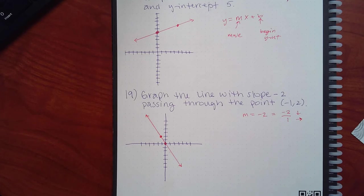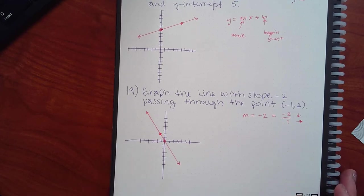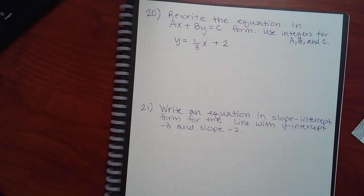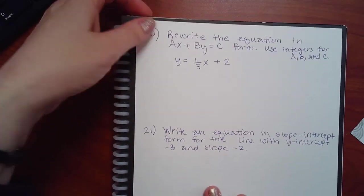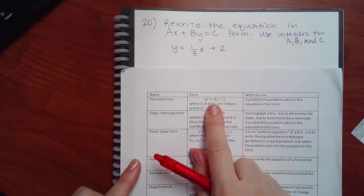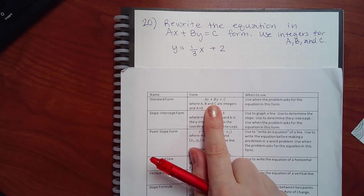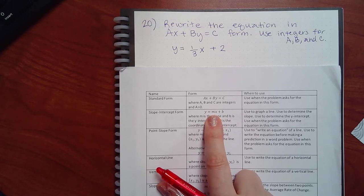You basically turn the negative two into a fraction so you have rise and run. Now, this next problem says rewrite the equation in standard form — ax plus by equals c. That form is called standard form. Currently the equation is in slope-intercept form, and we need to convert it.